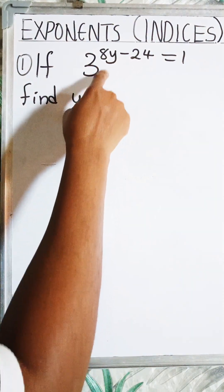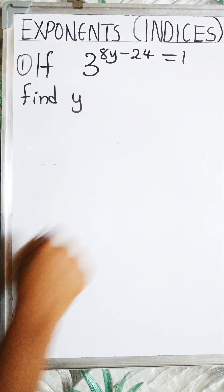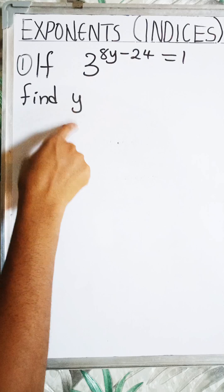If 3 raised to the power 8y minus 24 is equals to 1, find y.